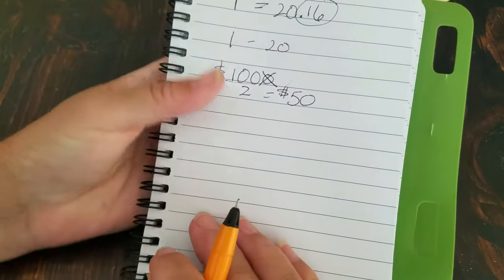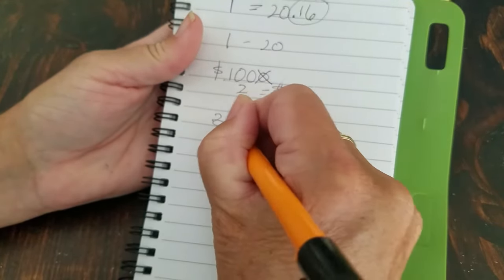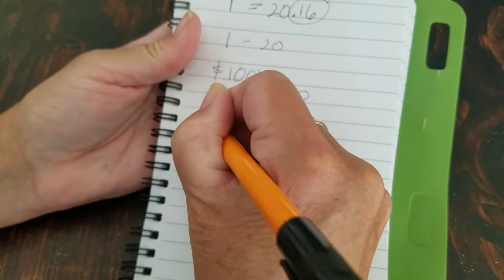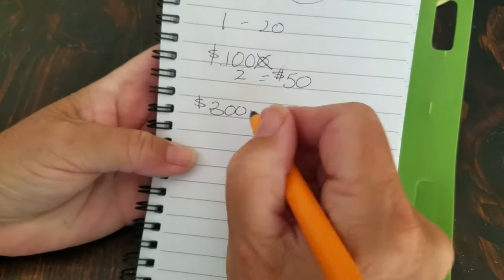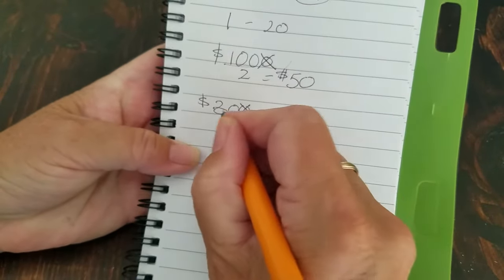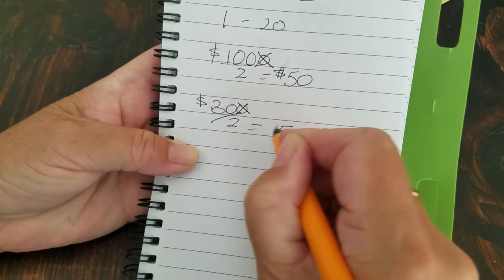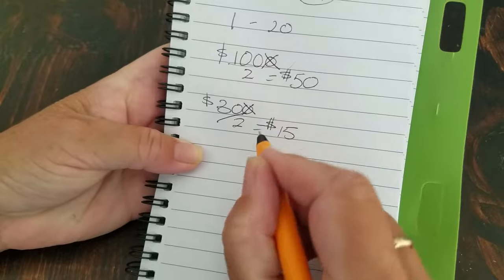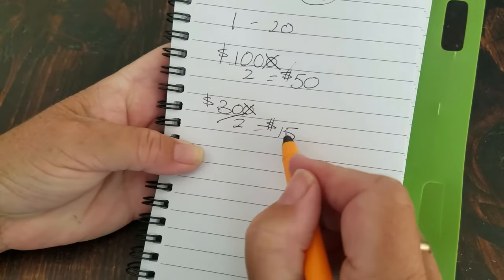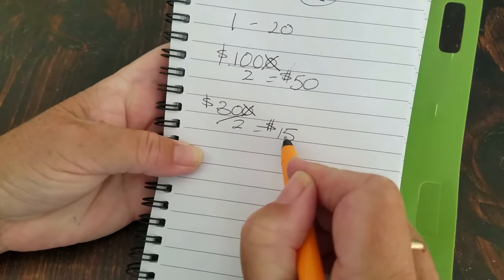Okay? So let's try 300 pesos. Drop the last zero, you got 30, divide by 2, equals 15. So 300 pesos equals 15 US dollars.